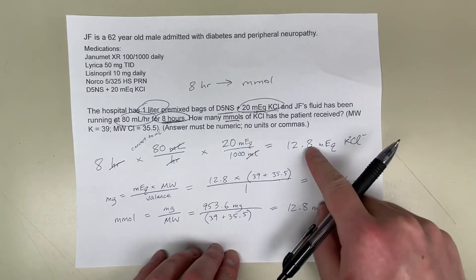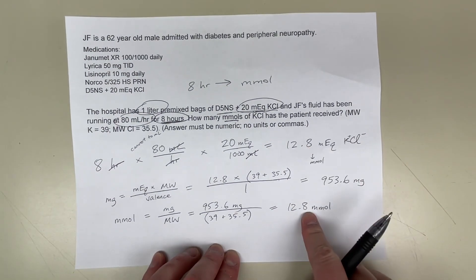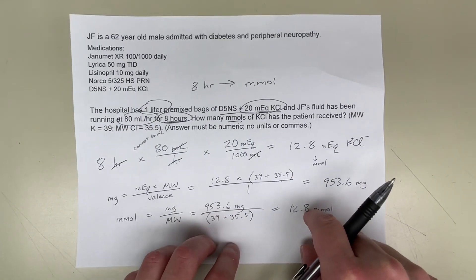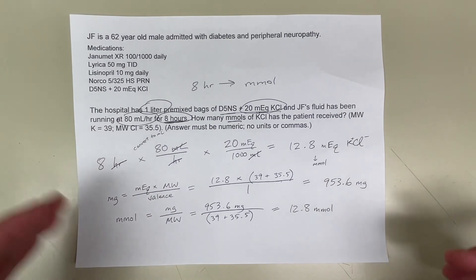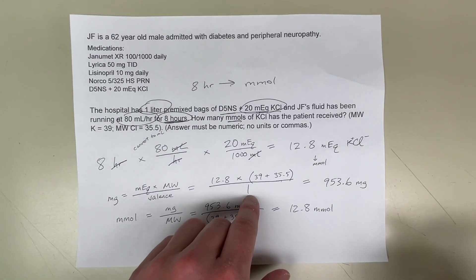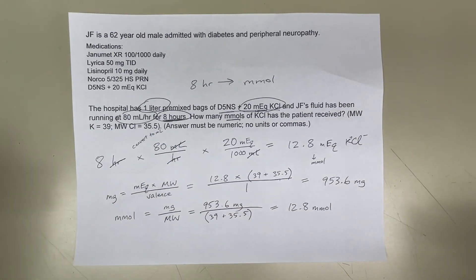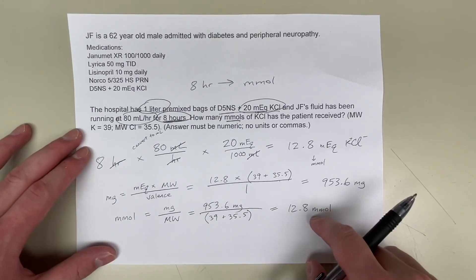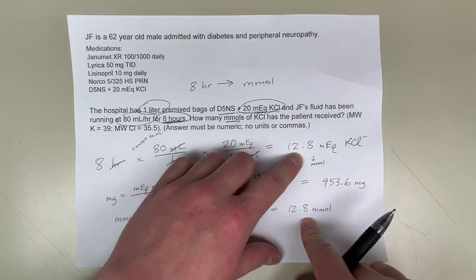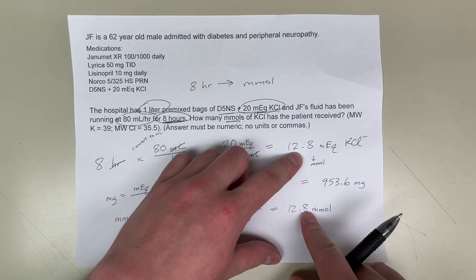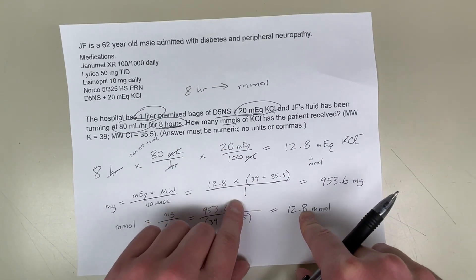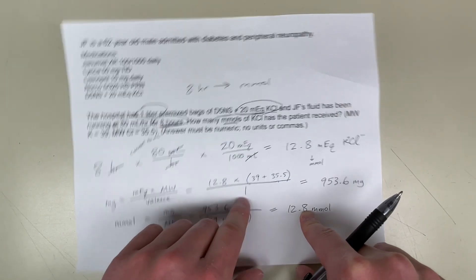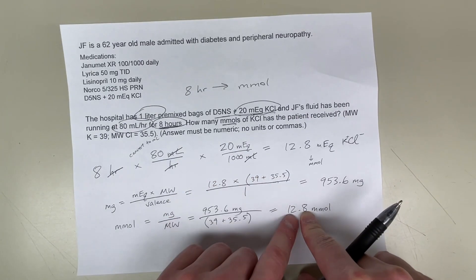I'm sure you noticed that this number of the milliequivalents is the same as the millimoles. It only works in this case, in this question in particular, because this valence is 1. If the valence is something other than 1, you're going to get a different number from your milliequivalents to millimoles. So that's why just coincidentally these two numbers are the same, because the valence is 1. And only if the valence is 1, a monovalent, can this milliequivalent equal the same as the millimoles.